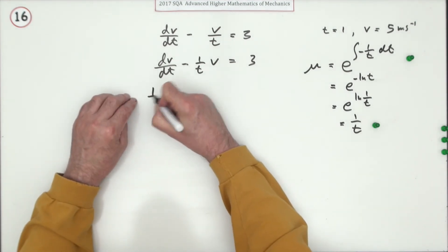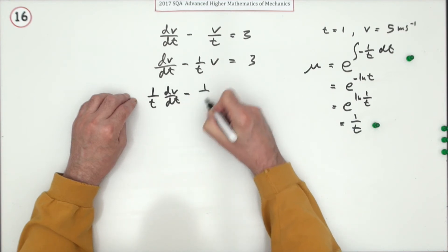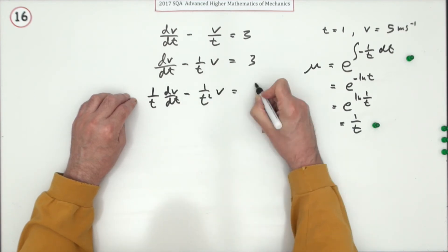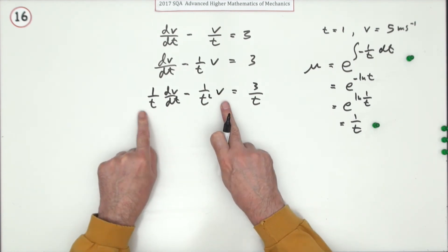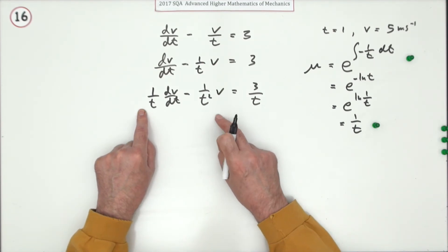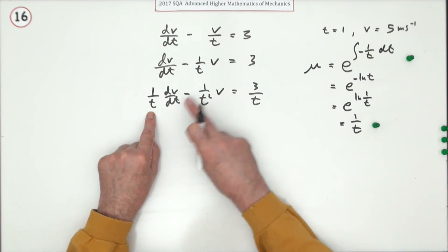Now just multiply by it: (1/t) times dv/dt minus (1/t²)v equals 3/t. What you should have created here is the perfect result from having used the product rule on the two functions. That's right: v left alone, the derivative of v. There's the function, and its derivative is negative 1/t².